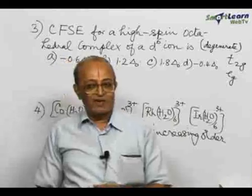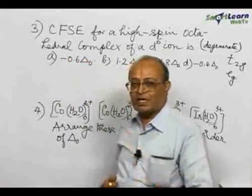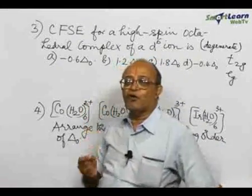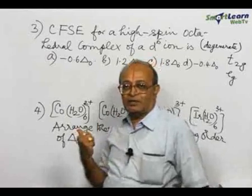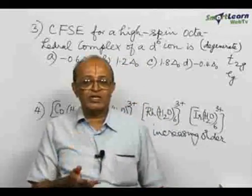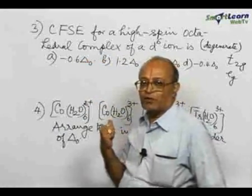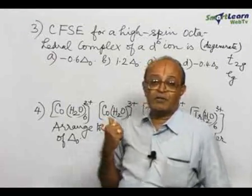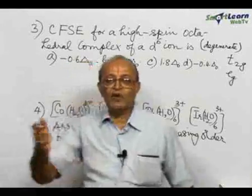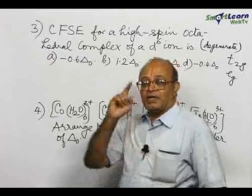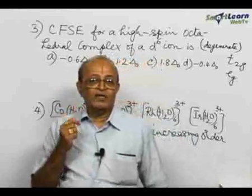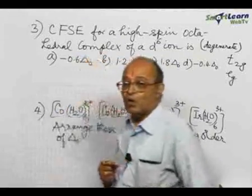Each electron in a T2g orbital will stabilize it by a value of minus 0.4 delta O. There are 3 d orbitals in T2g, each accommodating a maximum of 2 electrons — so 6 electrons total, each contributing minus 0.4. Similarly, eg orbitals, 2 in number, each accommodating a maximum of 2 electrons — 4 electrons total — each electron in the eg orbital will destabilize it by a value of plus 0.6 delta O.